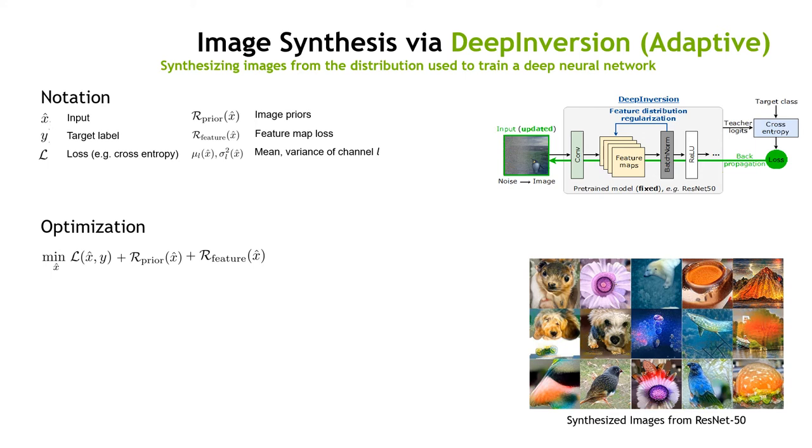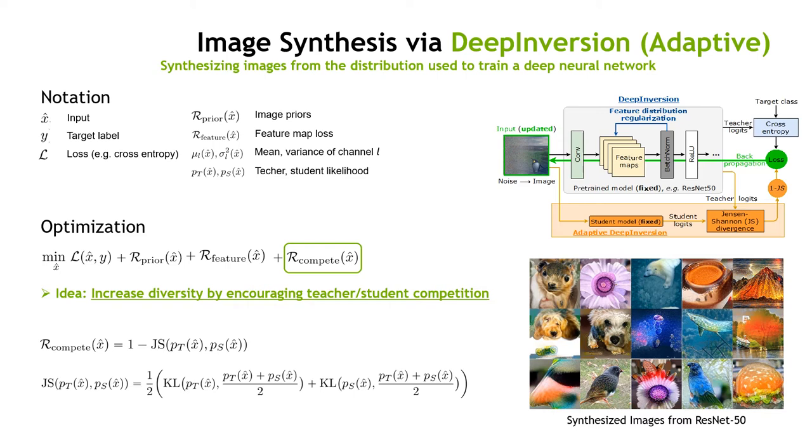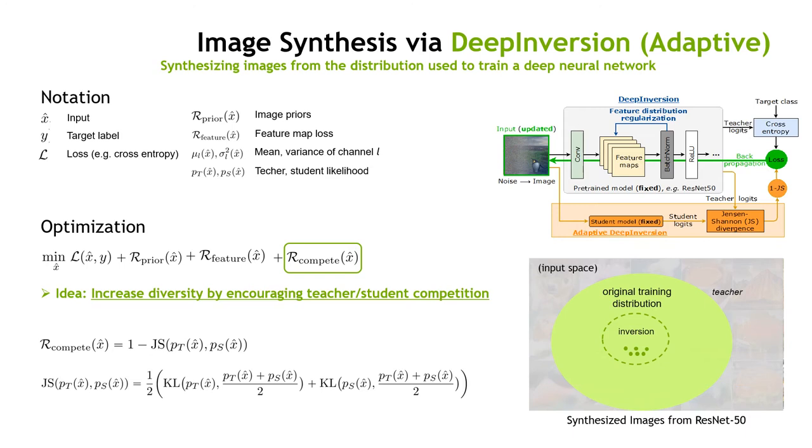We further propose adaptive deep inversion to improve image diversity. The main idea is to encourage generated images to cause teacher-student disagreement. This is done by penalizing output distribution similarities based on Jensen-Shannon divergence, which helps distributional coverage expansion.